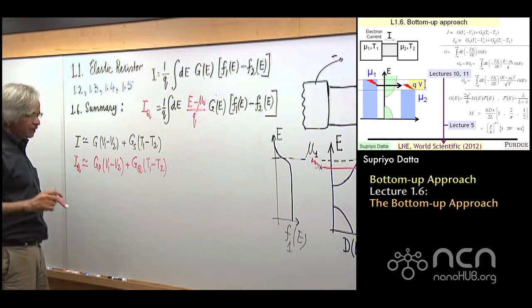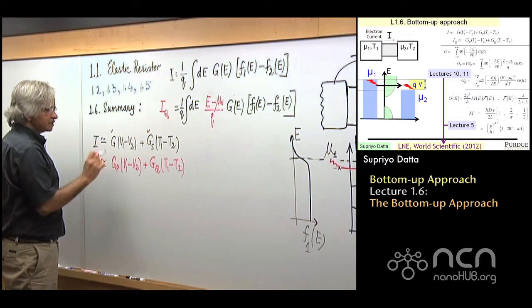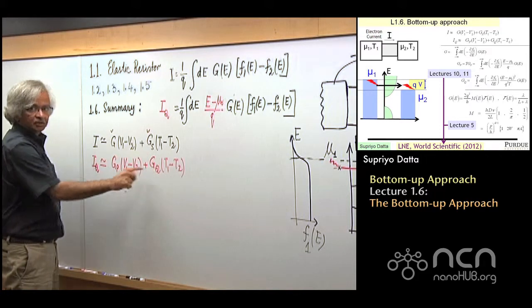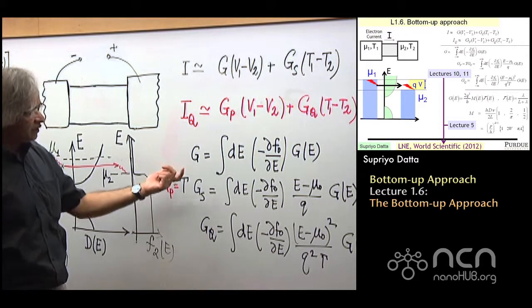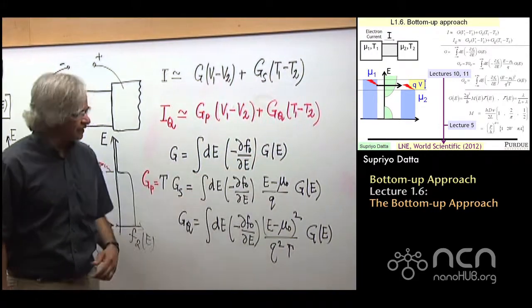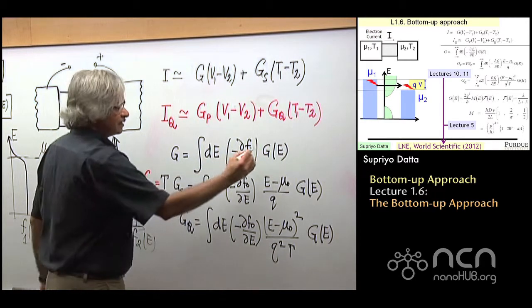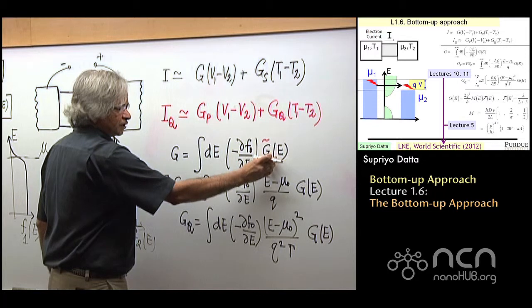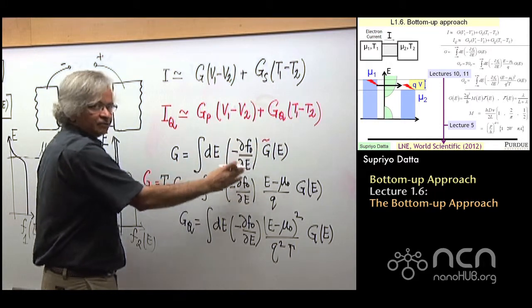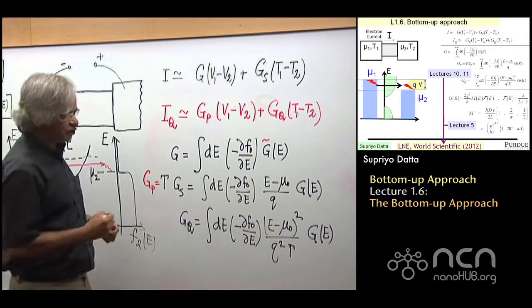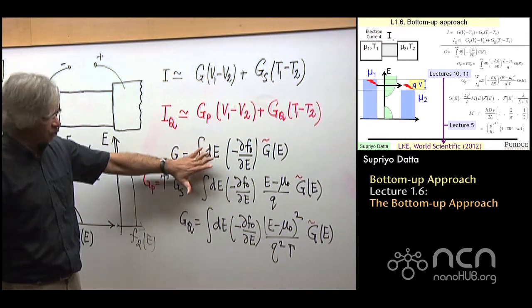You also saw how the same idea was applied to heat flow, the heat current. The expressions look very similar but then there is this additional term, this E minus mu over Q. From there, one gets these linearized expressions where current is proportional to voltage difference and temperature difference. What you have seen already is how one gets expressions for each of these four coefficients appearing here: a normal conductance, gs, gp, and gq. I should really be using two different symbols here. What I've written is g of E, the conductance function which depends on energy. What you actually measure is an average over energy, averaged with this df/dE in it.